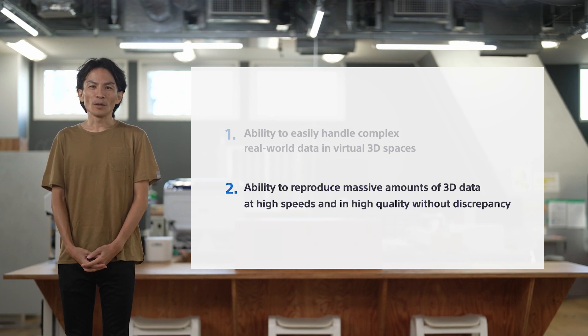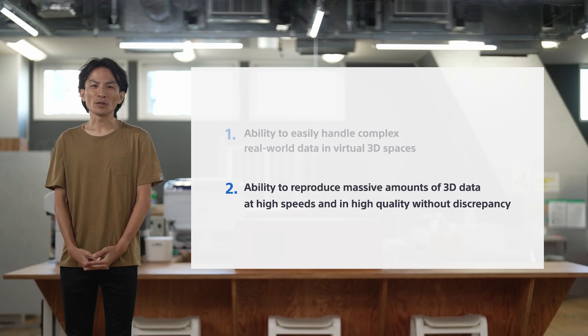Next, to create richly articulated virtual spaces, you need to be able to comfortably reproduce massive amounts of 3D data at high speeds and with high quality. Imagine a 3D map — even if objects in the foreground are depicted relatively precisely, those in the background are sometimes fuzzy or gray. Also, when you go quickly from looking up to looking down, the transition in the depiction of the space is not always smooth.